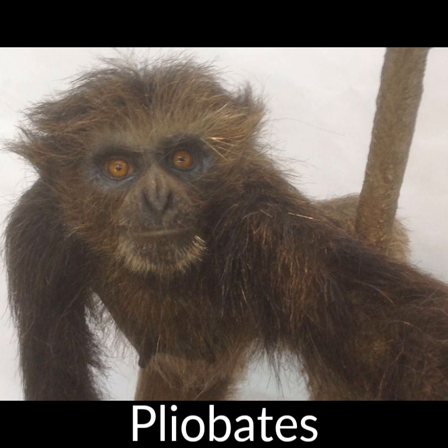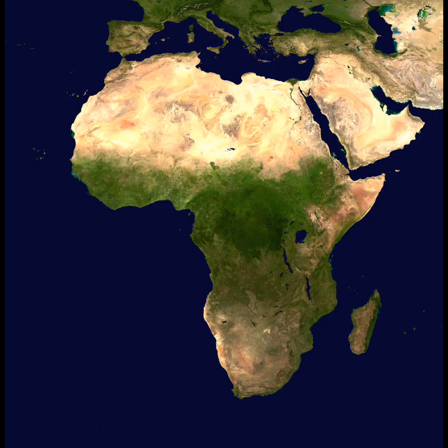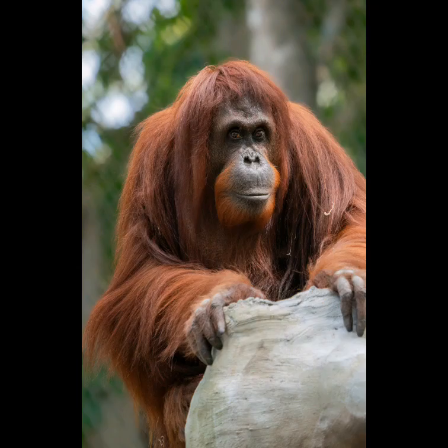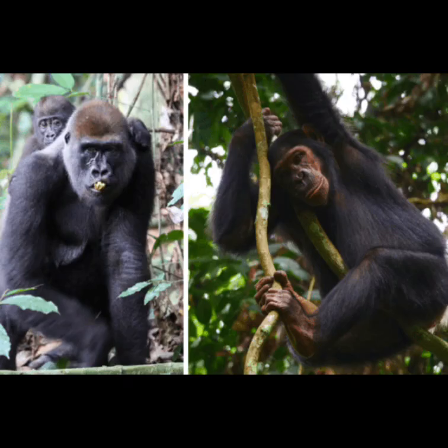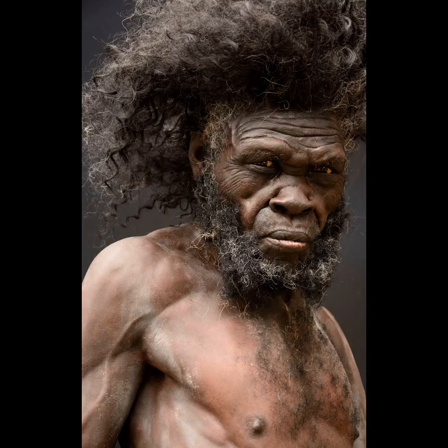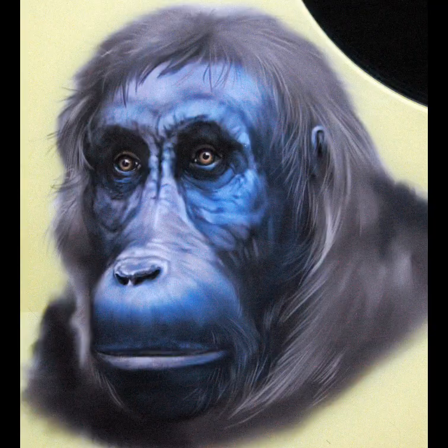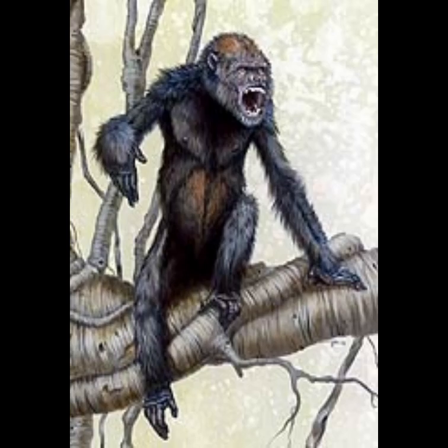Then around 14 million years ago, another dispersal out of Africa took place. This dispersal would mark the divergence of the orangutan lineage from the ancestors of the African apes and humans, with the ancestors of orangutans migrating into Asia, and the ancestors of the African apes migrating into Europe, with their descendants eventually migrating back into Africa around 8 to 9 million years ago, due to a cooling climate.